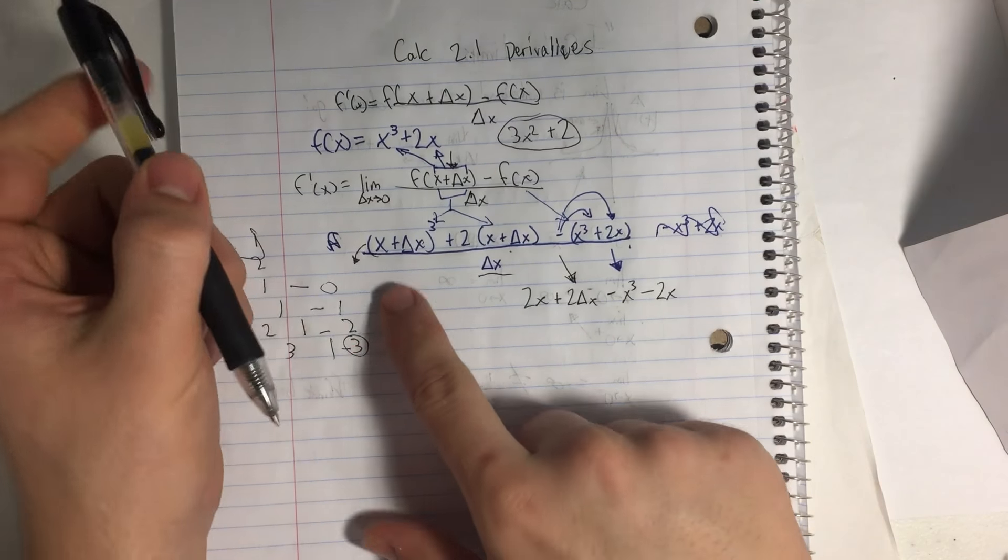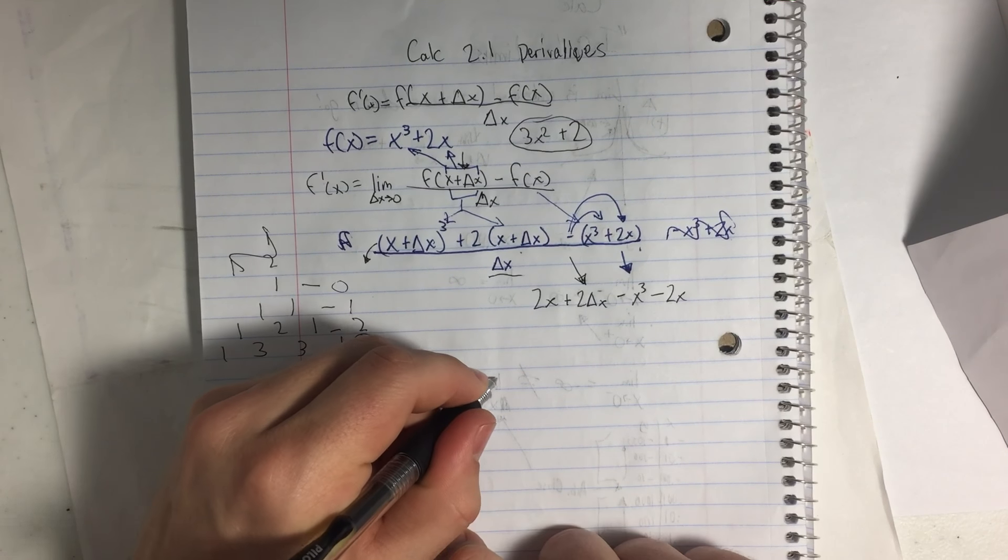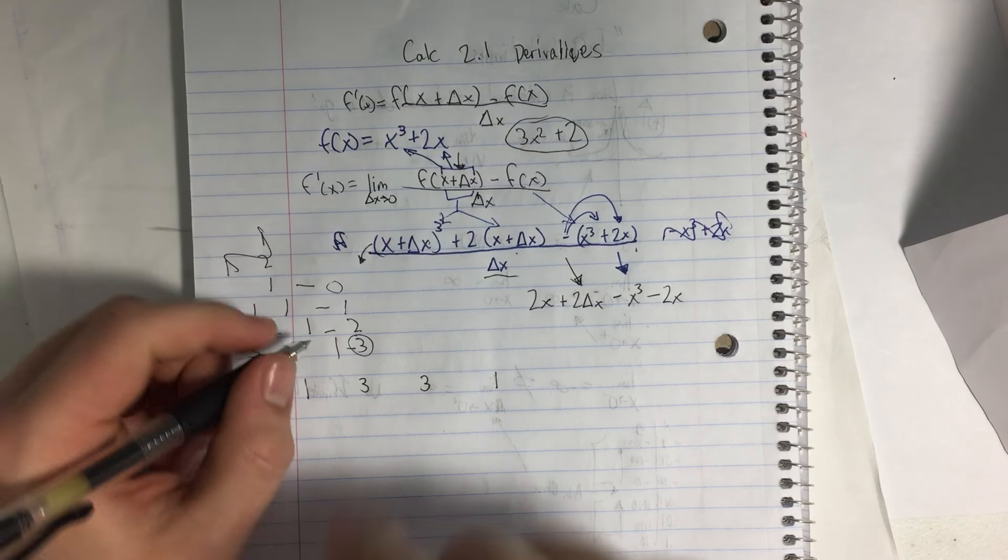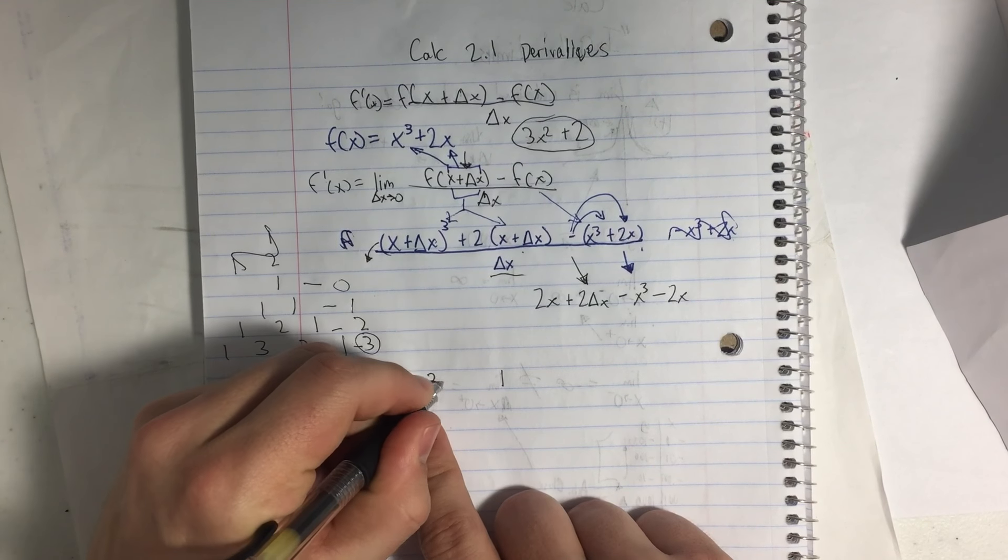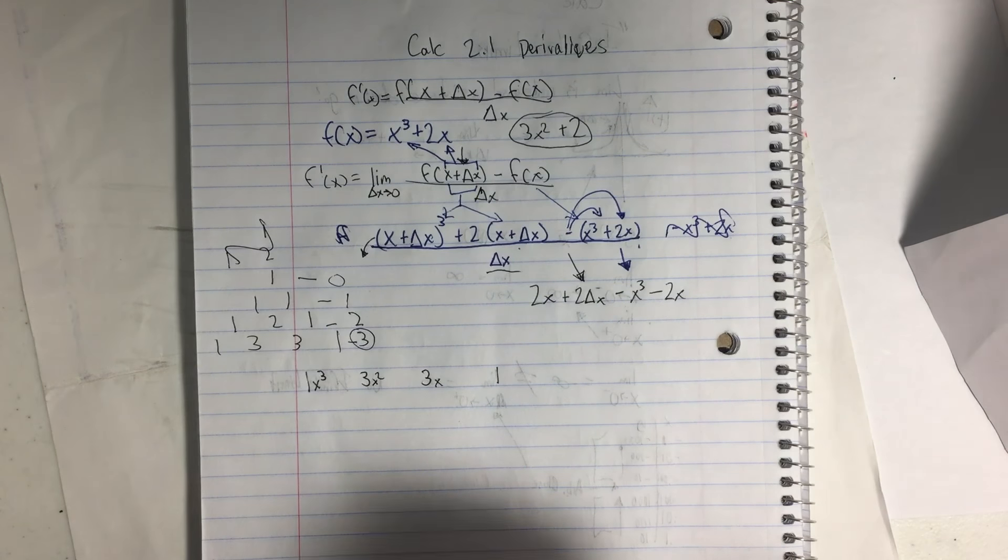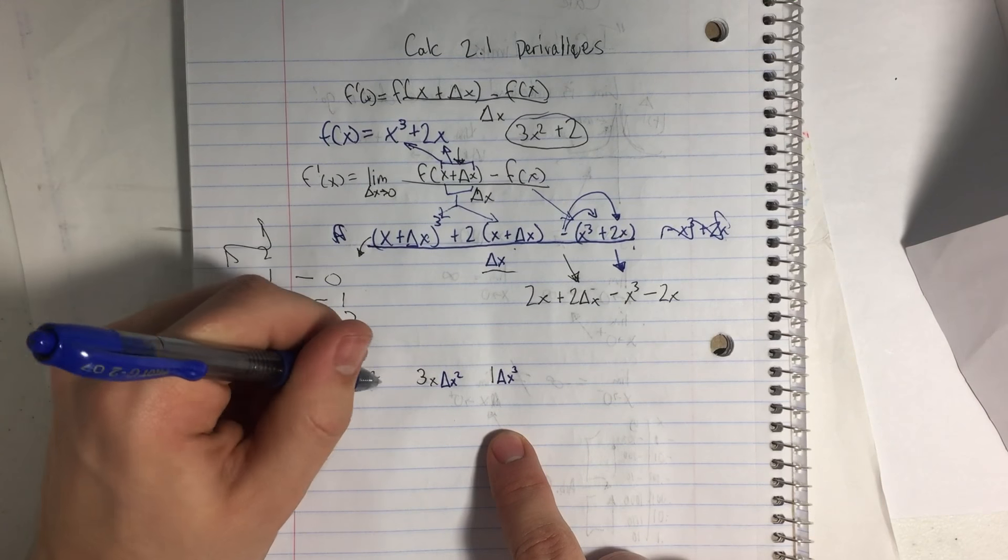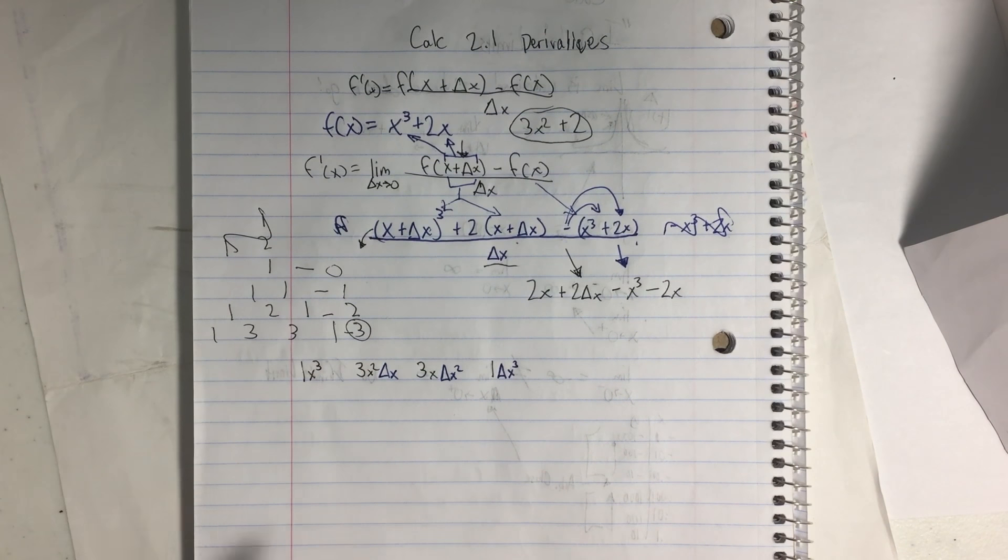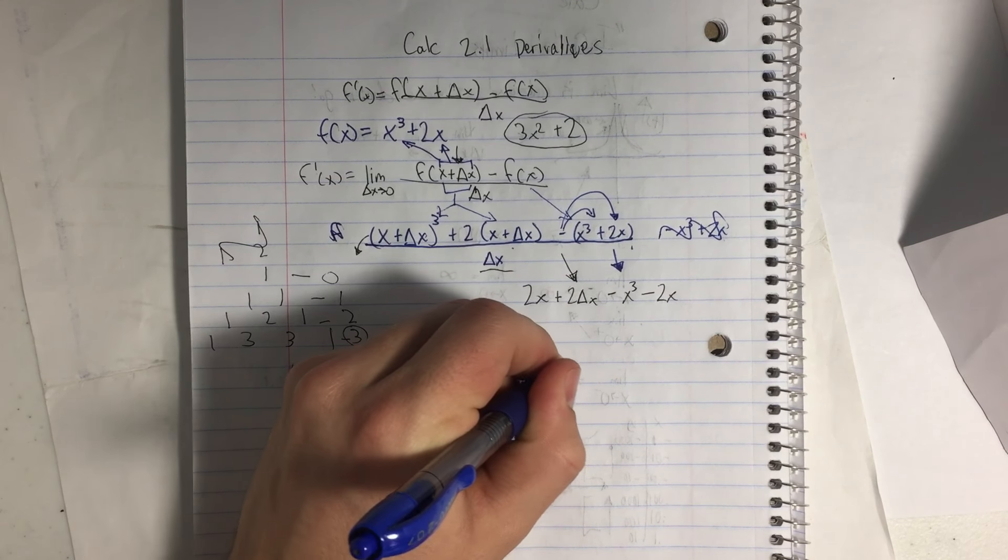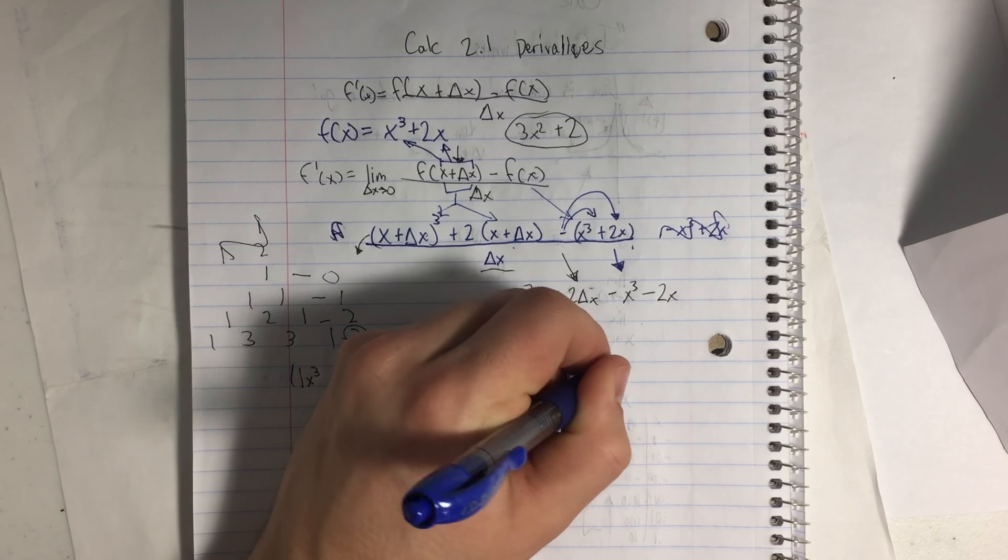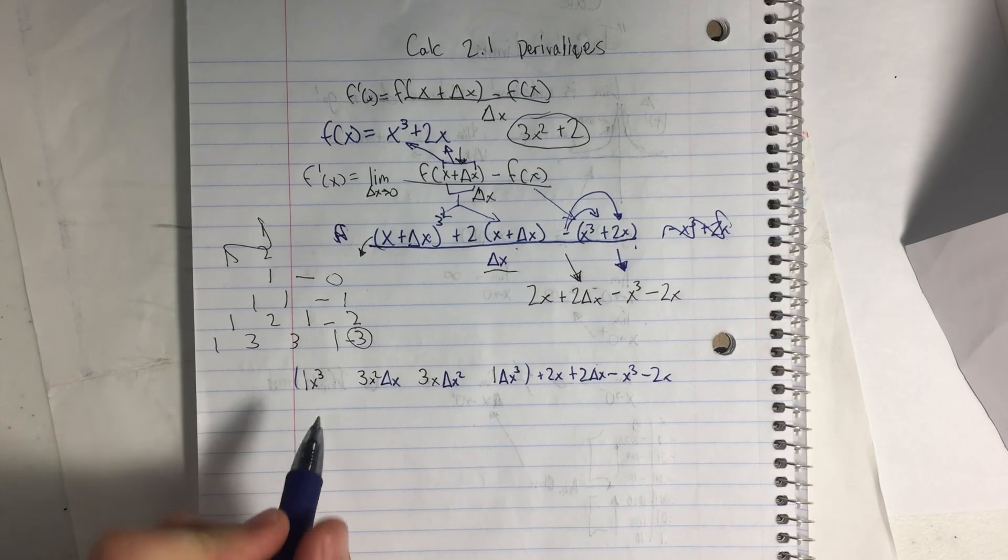Okay. So we're going to multiply it out. I'm going to write my 1, my 3, my 3, my 1. Okay. So it's going to be 1x³x²x. And then we go the back way. 1Δx³ Δx² Δx. Like that. Okay. So it's this part plus 2x + 2Δx - x³ - 2x. Right. All this piece. And these are just added together.